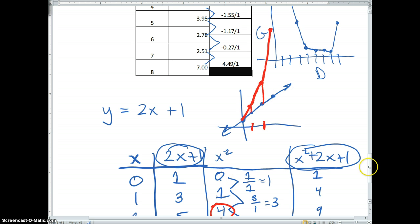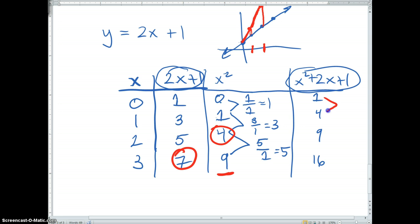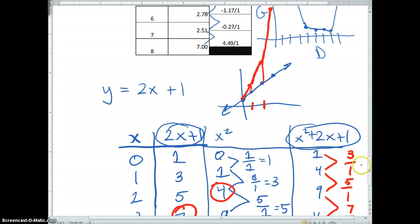Adding these squares to it, now notice again that the rate of change is 3 over 1, 5 over 1, 7 over 1. So, our slopes are getting consistently higher. And this is just something that we'll touch on in this entire chapter.